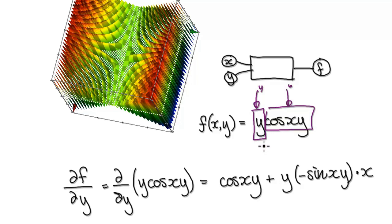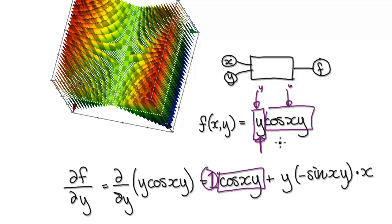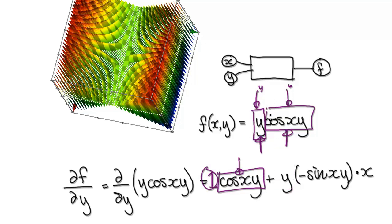Using the product rule: differentiate the first, which will be one, and leave the second alone. Then plus, leave the first alone and differentiate the second.